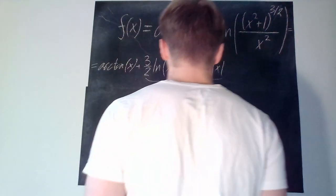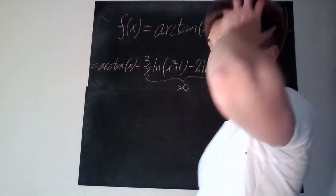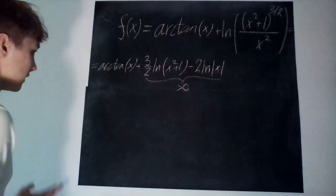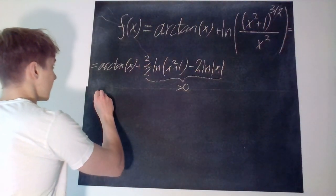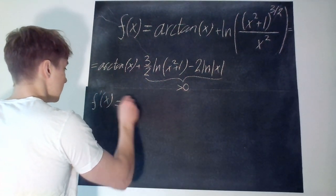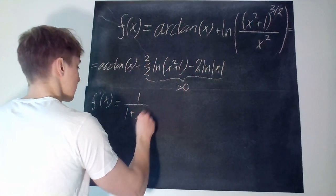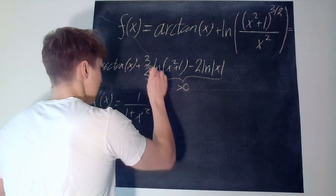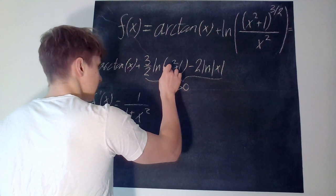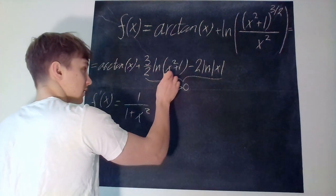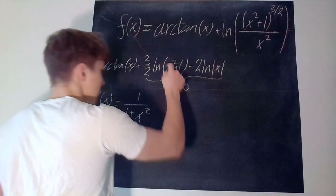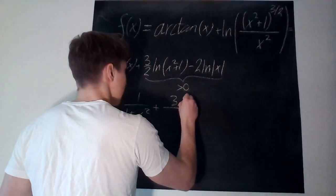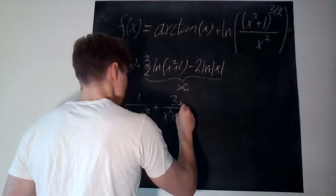We have to look at negative x's to find any solutions, but we'll get to that later. To sketch this graph, we also need an idea of how the derivative looks, so let's differentiate. We have that f'(x) is equal to 1/(1 + x²) — that is arctan's derivative. And then plus 3/2 of ln(x² + 1), so we get 1/(x² + 1) multiplied by the inner derivative, which is 2x. The 2's cancel out.